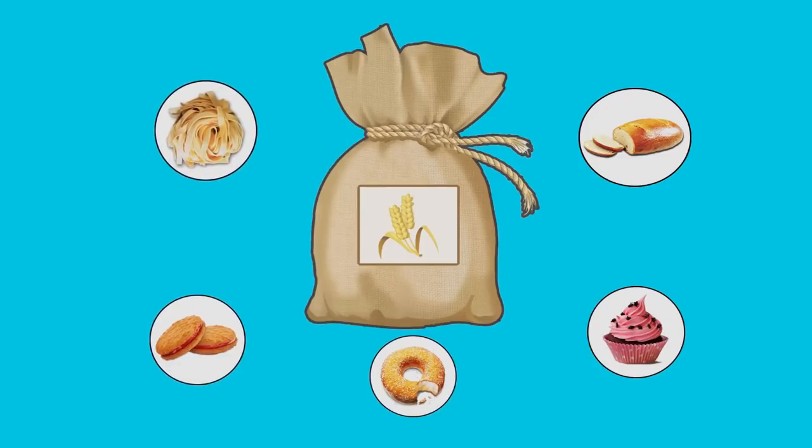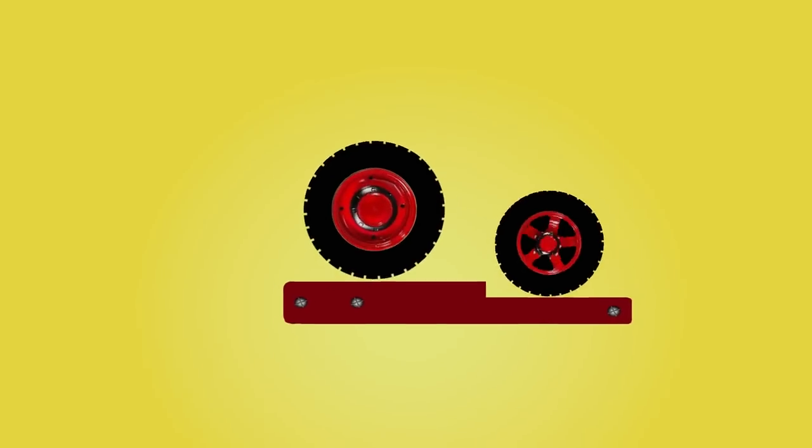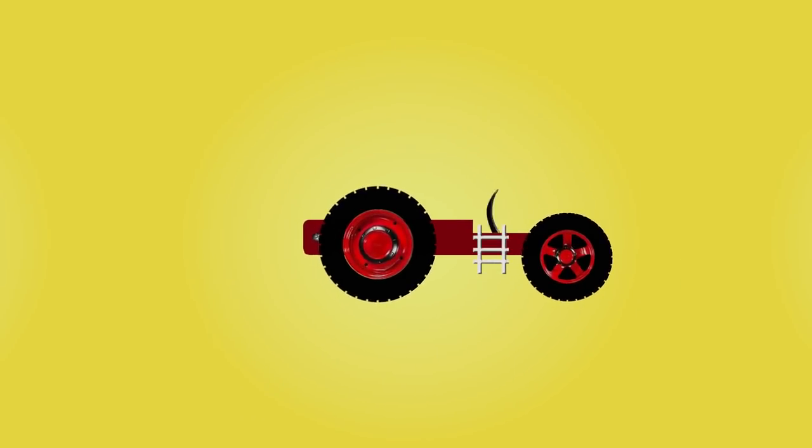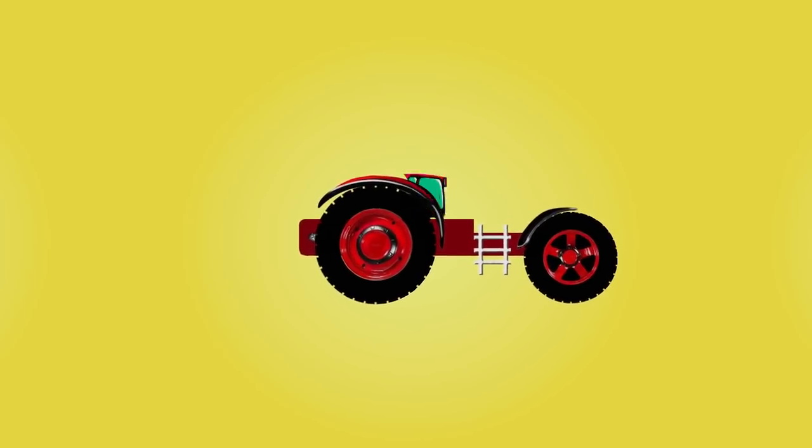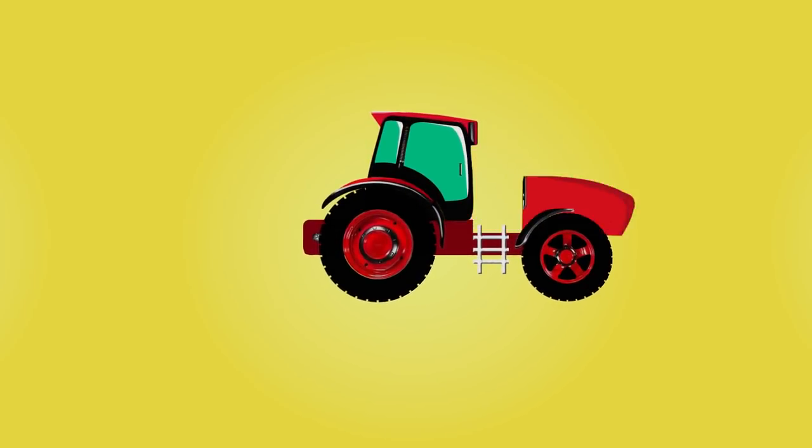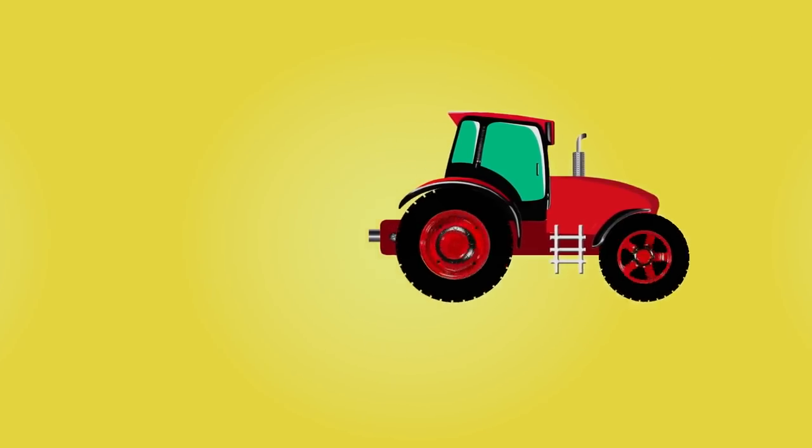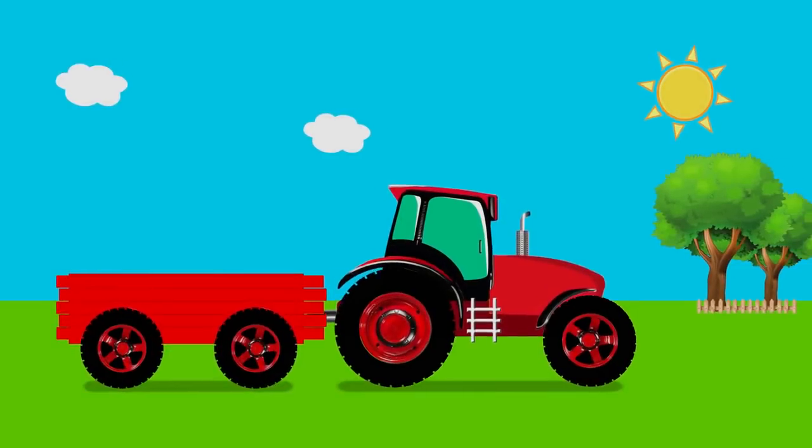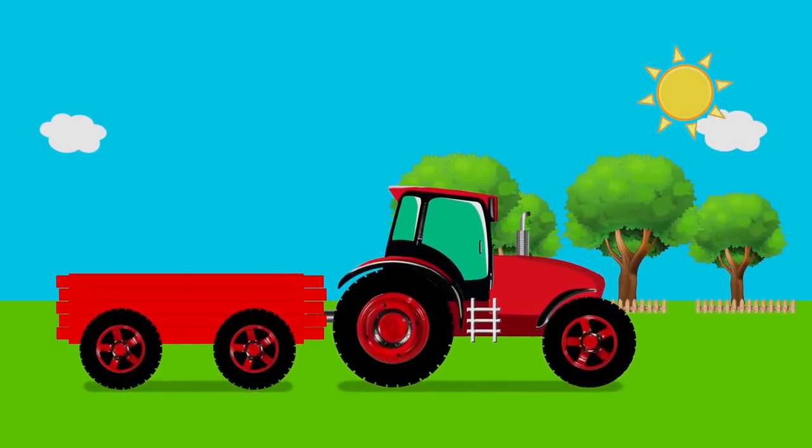Hi there today we will put together a tractor. Tractor has wheels of two different sizes, a little ladder, front and rear fenders, a cab for our driver, a hood, mufflers and an exhaust pipe. The red tractor is ready. As you see it has a red trailer.